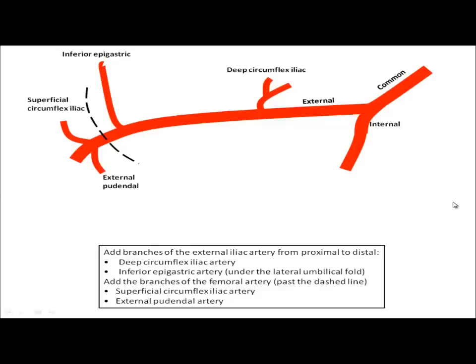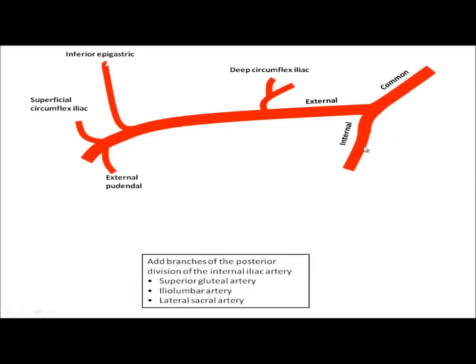Next up, let's take a look at the branches of the internal iliac artery. The internal iliac artery has branches that go anteriorly and posteriorly. We'll start with the posterior, because they're a little simpler. We've got a great big superior gluteal artery going to gluteus maximus, medius, minimus.